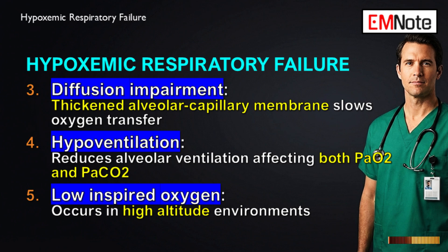Now for the fourth cause: hypoventilation. This one is different because of the carbon dioxide. Hypoventilation is a global reduction in air exchange — when ventilation drops, you don't just fail to bring in enough oxygen, you also fail to blow off enough carbon dioxide. It's usually a neurologic or musculoskeletal problem, not a primary lung issue, so a blood gas analysis will tell you right away. The fifth cause is environmental: low inspired oxygen. High altitude is the perfect example — the lungs are working perfectly, but there's just not enough oxygen in the air to begin with.